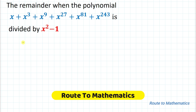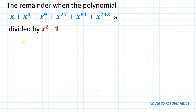Hello everyone, welcome to Root 2 Mathematics. In this video we're going to solve an interesting question from the chapter polynomials. The given question is: find the remainder when the polynomial x + x³ + x⁹ + x²⁷ + x⁸¹ + x²⁴³ is divided by x² - 1.